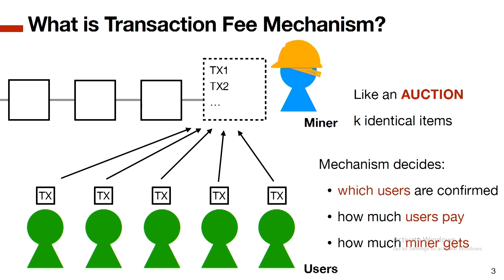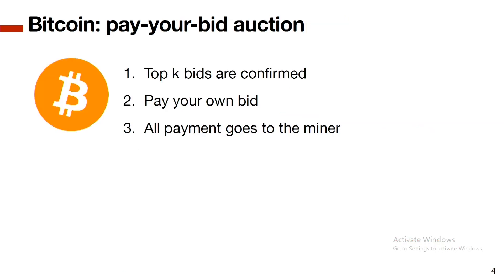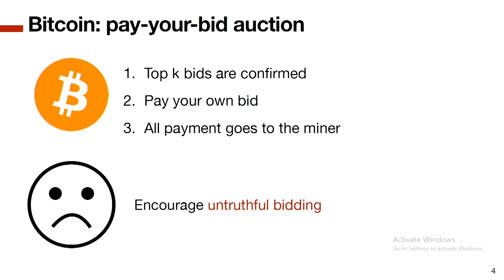What is the issue with the current mechanism? Bitcoin uses the pay-your-bid auction: everyone specifies the price they are willing to pay, miners pick the highest K bids where K is the block size, everyone pays their own bid, and all payment goes to the miner.